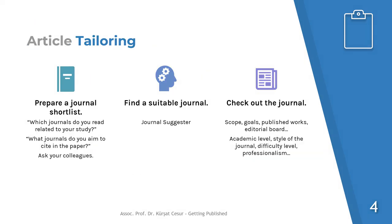Now let's talk about article tailoring. Prepare a journal shortlist to decide upon the best choice of journal that can accept your study. To do that, you can ask yourself two questions: which journals do you usually read related to your study, and what journals do you aim to cite in your paper?